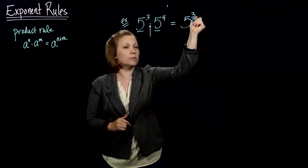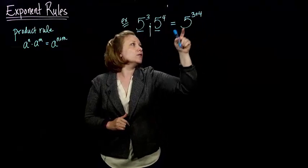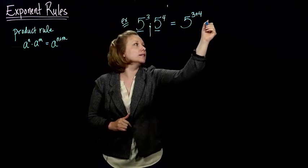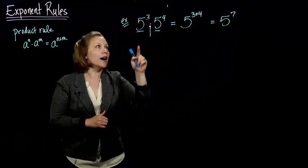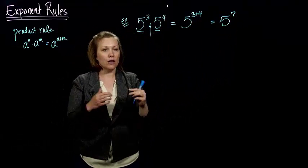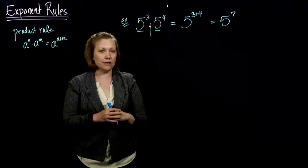Well, my exponents are 3 and 4, so 3 plus 4 is 7. So 5 to the 3rd times 5 to the 4th is the same as 5 to the 7th.